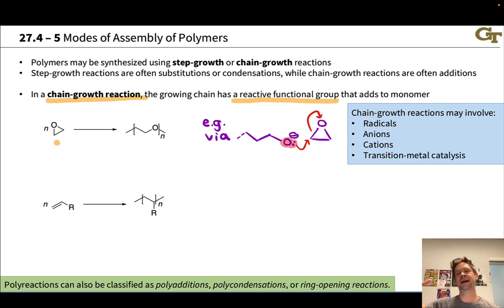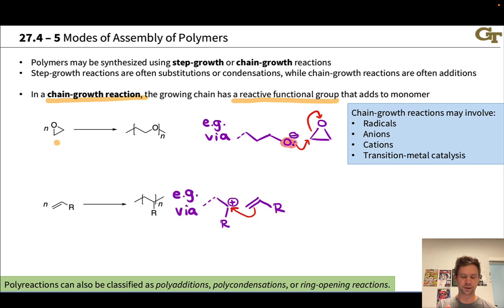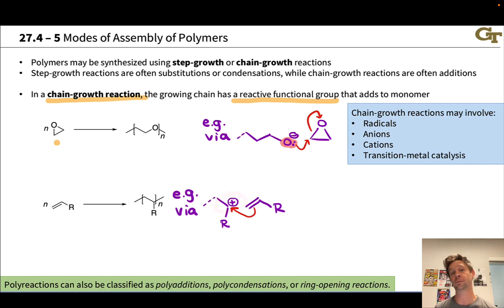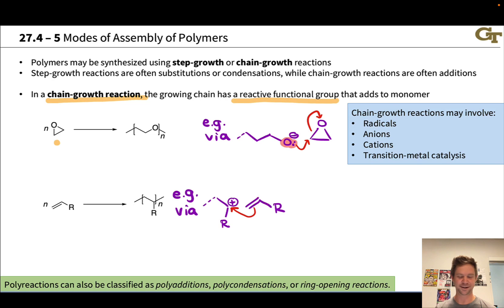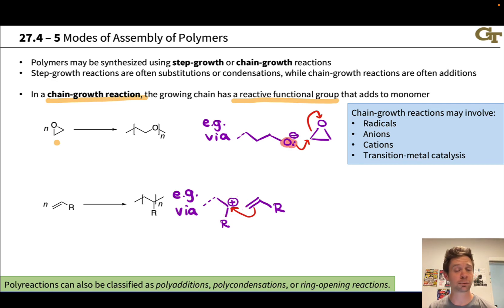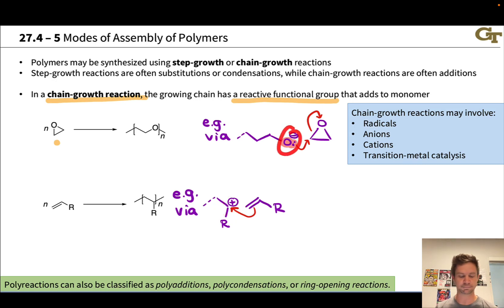The chain grows off that reactive O⁻ end. It's also possible to run polymerizations under cationic conditions — in the presence of a Brønsted or Lewis acid, one monomer develops a carbocation that can be attacked by the pi electrons of another monomer molecule, lengthening the chain and creating a new cation, which in turn is attacked by another monomer. The chain grows off this cationic reactive end, as opposed to an anionic end in the first case.